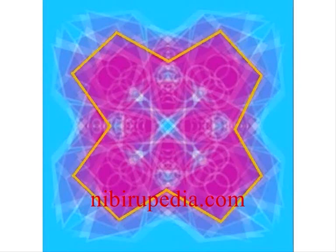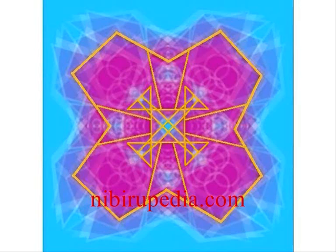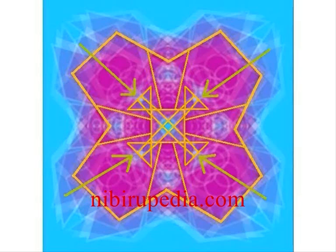First, we have an X on the outside representing Planet X, Nibiru, the planet of the crossing. Then we have a square in the center and an iron cross just like the Nazis' iron cross. Then we have an X in the center which, along with the square box, represents a two-dimensional bird's eye view of a Mayan pyramid. The small X in the center then extends into a larger X with four inward-facing triangular shapes.